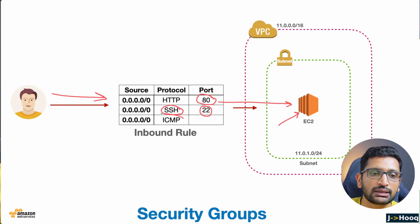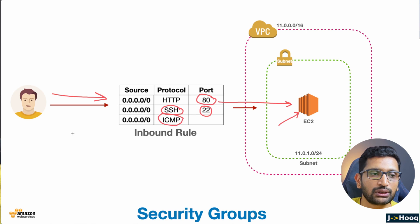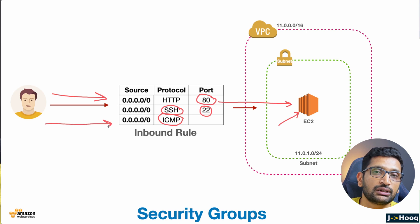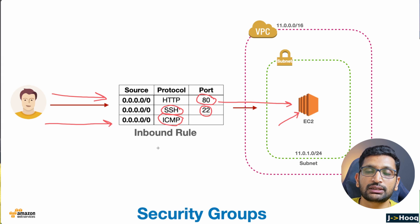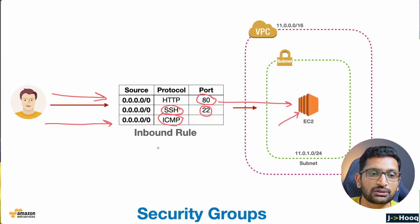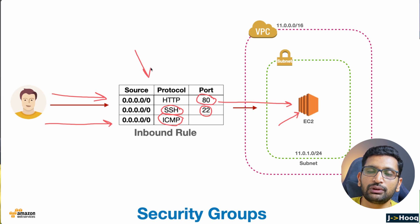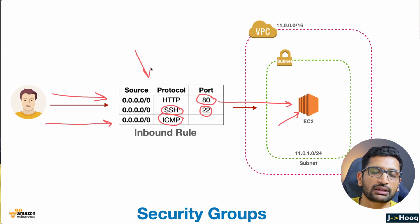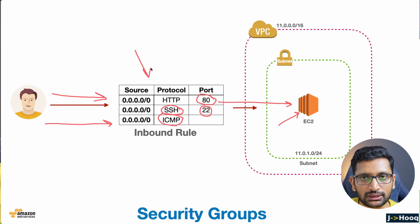The third thing is ICMP. I have put ICMP into the inbound security group so that a user can ping and check the status of your EC2 instance — whether that particular EC2 instance is accessible or not using the ping command. These are very common inbound rules which we generally put inside our security group so that we can access our services running on our EC2 instance.